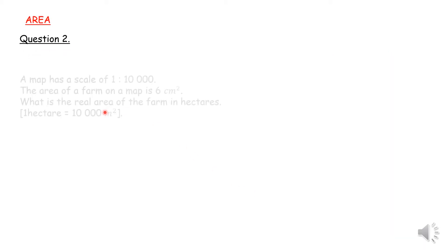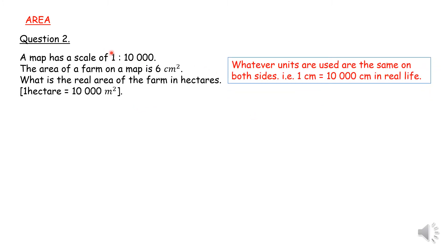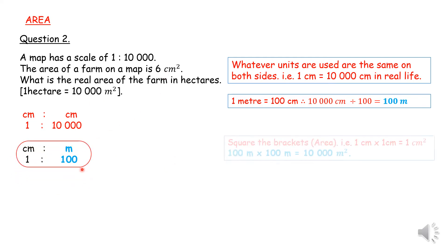Let's look at area. So we have a map with a scale of 1 is to 10,000. The area of a farm is 6 centimeters square on a map. What is the real area of the farm in hectares? The scale is a length scale, so 1 centimeter equals 10,000 centimeters in real life. I like to change the units to what I need my answer in — meter square. So I change 10,000 centimeters to meters, which is 100 meters. So now 1 centimeter represents 100 meters on the map. I need to square my scale in order to find the area.